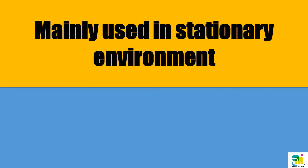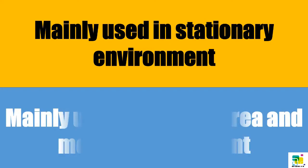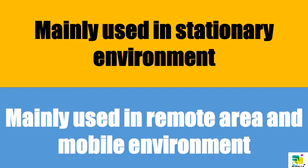A repeater is mainly used in a stationary environment, and an amplifier is mainly used in remote areas and mobile environments.